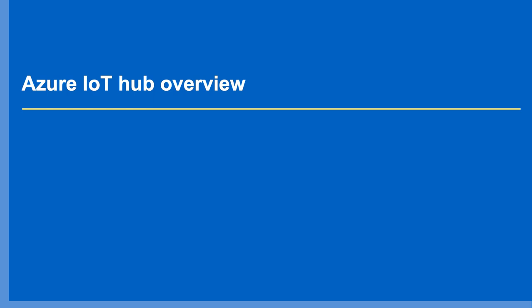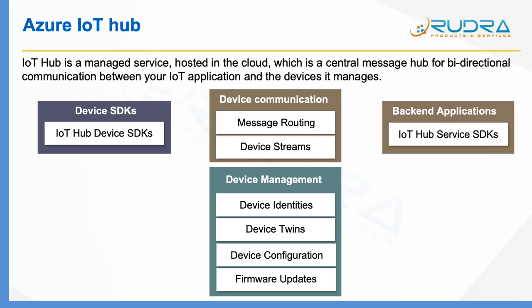Hi, welcome to this lecture. In this lecture, I'm going to provide you an introduction to Azure IoT Hub and its capabilities. Azure IoT Hub is a managed service hosted in the cloud, which is a central message hub for bi-directional communication between your IoT application and devices it manages. Azure IoT Hub comes with lots of capabilities.